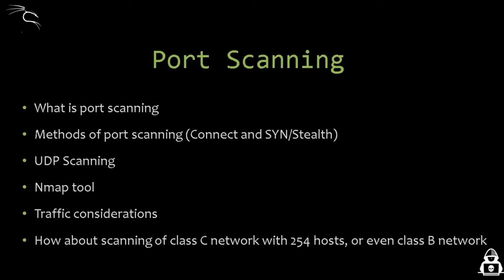The default nmap TCP scan will scan around the 1000 most popular ports on a given machine, but consider the traffic you are generating — scanning 1000 ports can generate up to 70 kilobytes of traffic. Scanning all 65,535 ports generates around 4 megabytes of traffic per host. Scanning a full Class C subnet of 254 hosts could approach 1 gigabyte of traffic, and a full Class B network would generate even more.